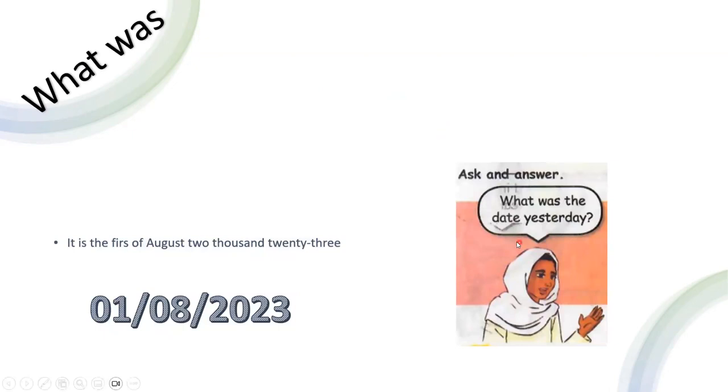What was the date yesterday? If I want to ask about the thing which hasn't happened in the past - yesterday, the day before, last year, last month, last week - I will ask with 'what was.' What was the date yesterday? The date yesterday is the first of August 2023. It is the first of August 2023.